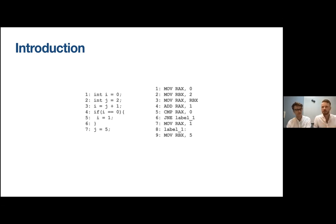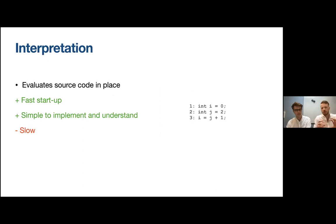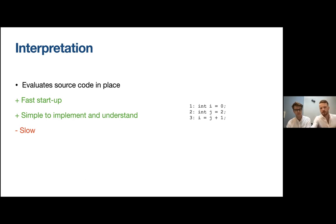There are different approaches to this, but for this presentation we will go through interpretation and compilation. Interpretation is the process of evaluating code more or less as it was written. An interpreter will evaluate this code line by line and sub-expression by sub-expression. The benefit is that we don't need to do much work before we can start evaluating — startup time can be really fast and it's quite easy to implement. However, this way of evaluating a program can be quite slow compared to other methods.